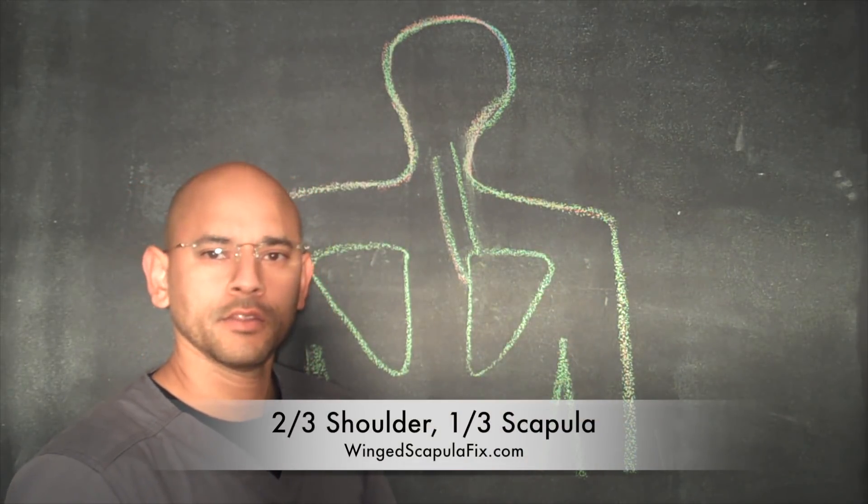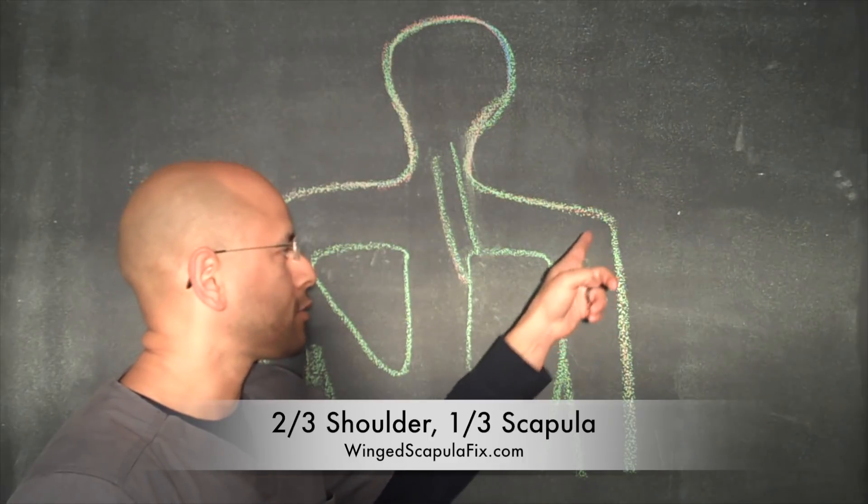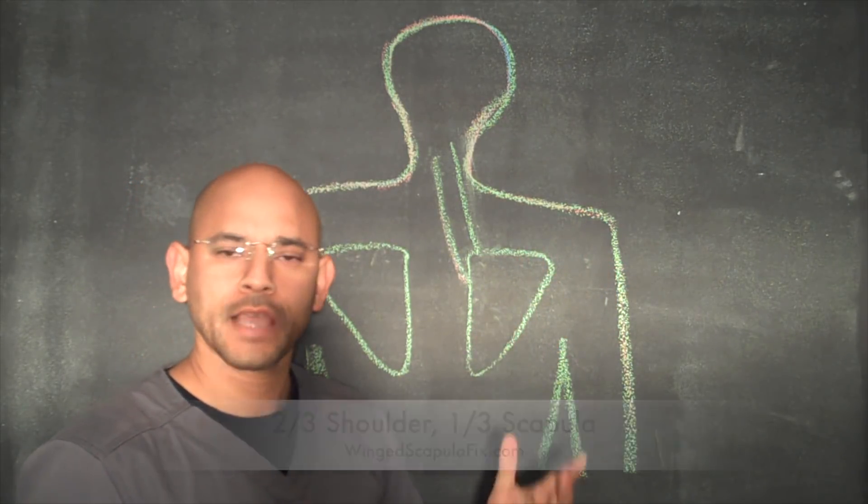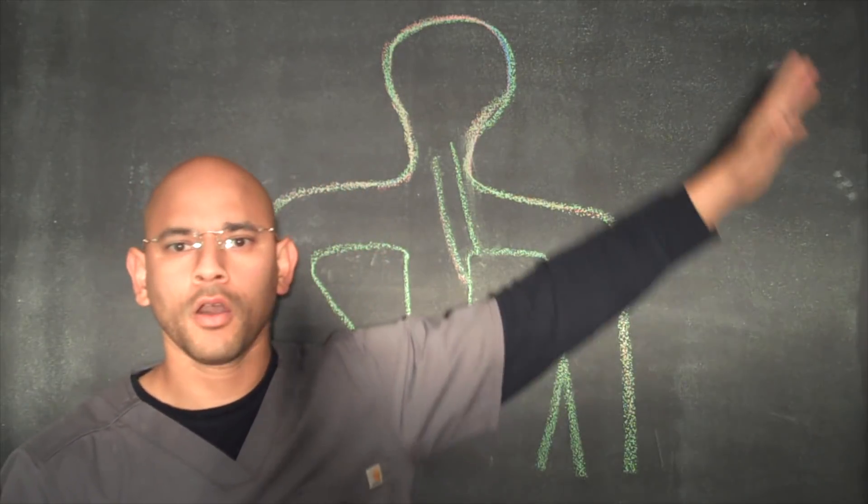Two thirds of the movement in the shoulder are done by the shoulder joint itself. The other third comes from the scapula, so for example when somebody is lifting their arm all the way up like this, two thirds of that movement, the initial movement, comes from the shoulder joint.